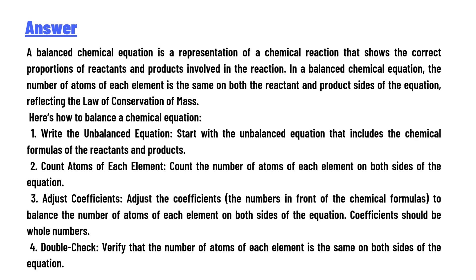The answer is: A balanced chemical equation is a representation of a chemical reaction that shows the correct proportions of reactants and products involved in the reaction. In a balanced chemical equation, the number of atoms of each element is the same on both the reactant and product sides of the equation, reflecting the Law of Conservation of Mass.